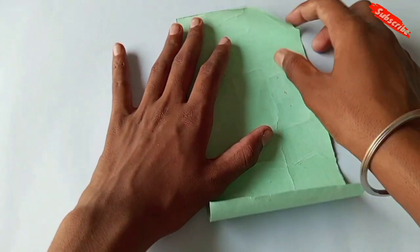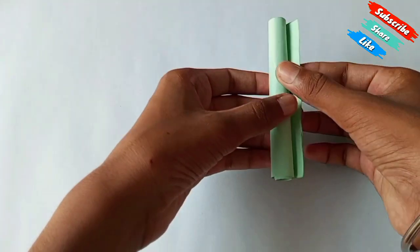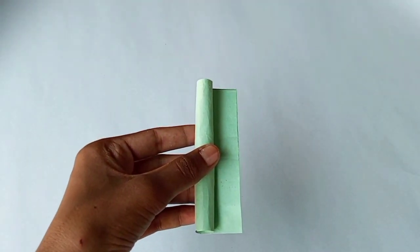I am going to make a matchbox gun and I am going to use paper here. I am going to use color paper. If you don't have color paper, you can use normal white paper or a copy page.